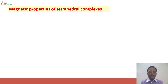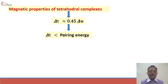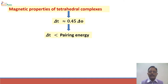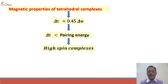Regarding magnetic properties of tetrahedral complexes, the crystal field splitting energy delta_T is of the order of only 0.45 × delta_O, which is much less than 50% of the delta_O value. As a result, delta_T is always less than the pairing energy. Since the crystal field splitting energy is less than the pairing energy, pairing is never preferred, and all tetrahedral complexes are high spin complexes. In high spin complexes, they contain exactly the same number of unpaired electrons as the free metal ion.